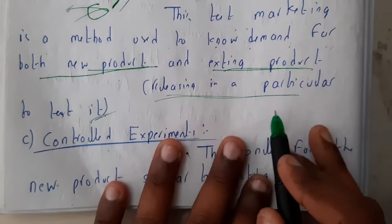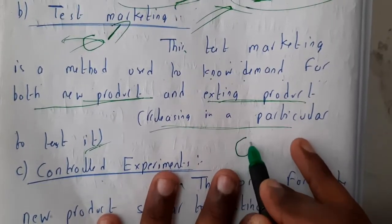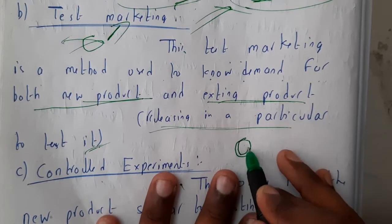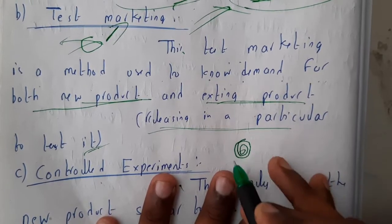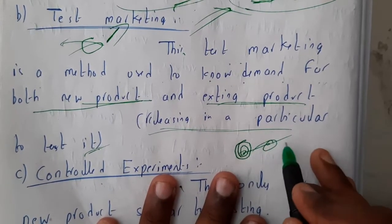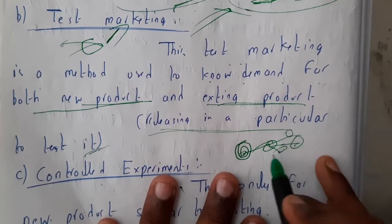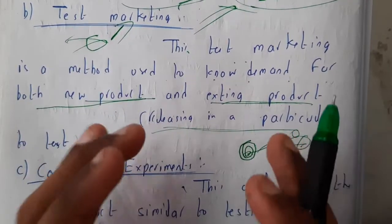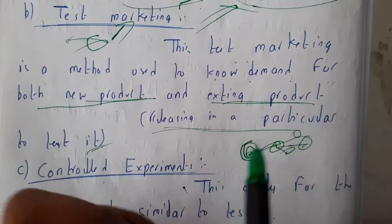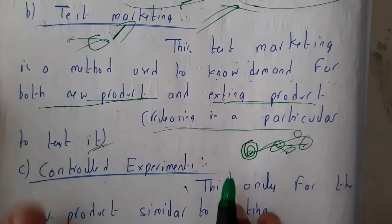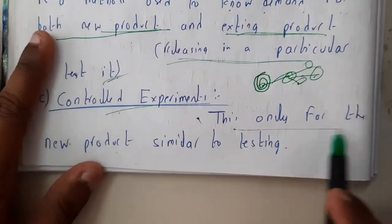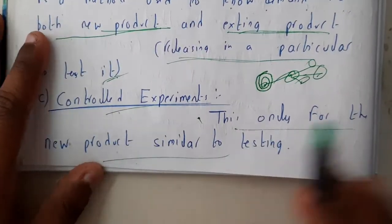The best example of a controlled experiment is games. Before releasing games all over the world, they release them in particular areas like Canada, Australia, and the USA — specific regions where they test the game. This comes under the controlled experiment, which is only for new products. Similar to testing, a controlled experiment involves pricing and advertisement.